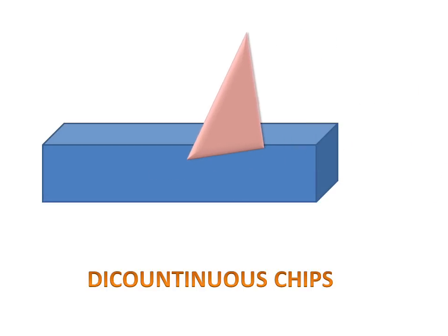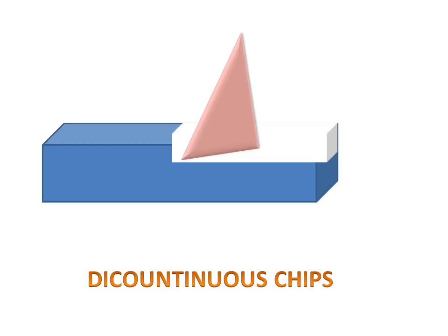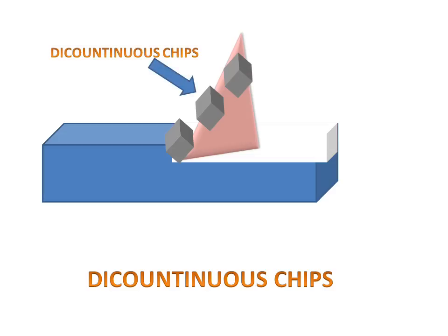The single point cutting tool will travel and material will be removed, and these types of chips are formed. These are called discontinuous chips because they will be formed in fragments.